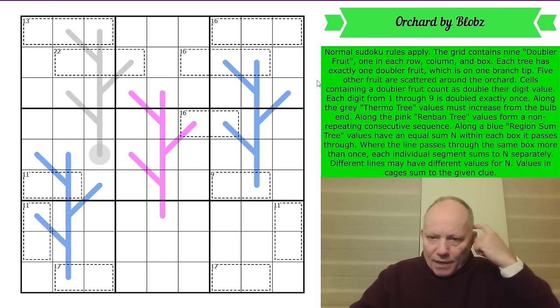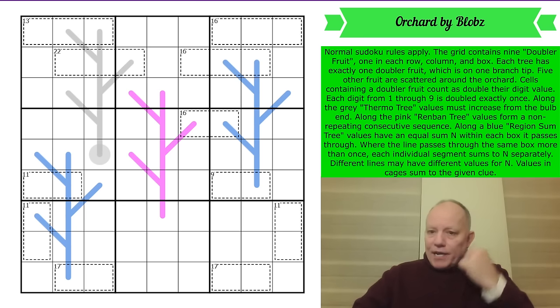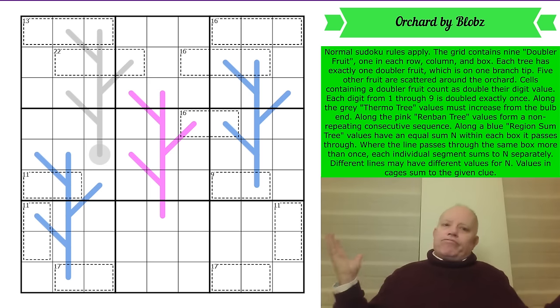And along a blue region sum tree, values have an equal sum n within each box it passes through. Where the line passes through the same box more than once, each individual segment sums to n separately. I'm a bit surprised by that. Different lines may have different values for n. So each of the trees may have a different n value. Those four cells are going to be equal to the total of those three cells, and also equal to the total of that one cell. Values in cages sum to the given clue. So those three cells add up to 16, but it's their values, not necessarily their digits. You may have to double one of them. Give it a try.